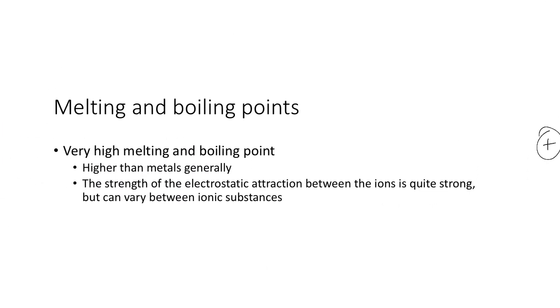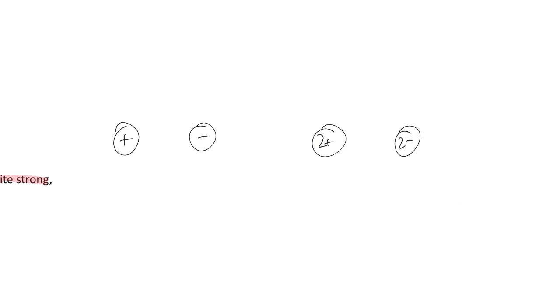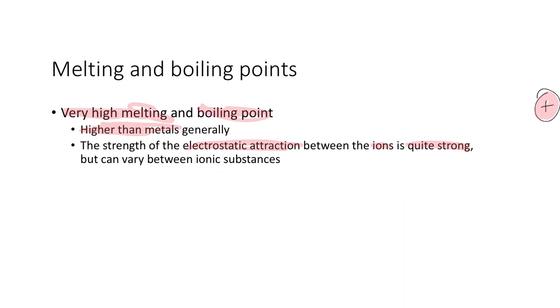And then finally, melting and boiling points. They have very high melting and boiling points. Generally, they are higher than metals. It's due to the strength of the electrostatic attraction between the ions, which is quite strong, but it can vary between ionic substances. For example, if I have a one positive and a one negative, they're going to attract each other in a certain amount. But if I have a two positive and a two negative, they're going to attract each other much more because they're doubly as charged. So therefore, it's going to require even more energy to separate those two to melt them.